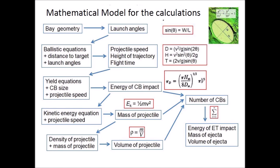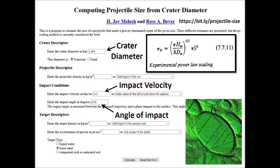The energy of the extraterrestrial impact corresponds to the combined energy required to create the Carolina Bays. The program to calculate projectile size from crater diameter was developed by Professor Jay Melosh and Ross Baer. The yield equations relating energy to crater size were developed from experiments of nuclear explosions, conventional military explosives, and dynamite explosions for mining, road building, and other civilian uses.